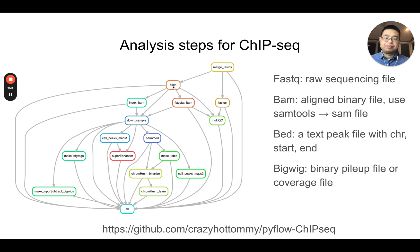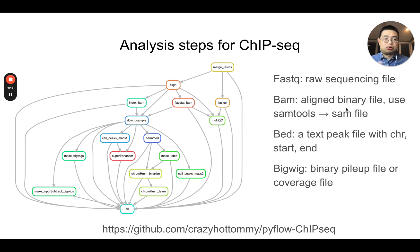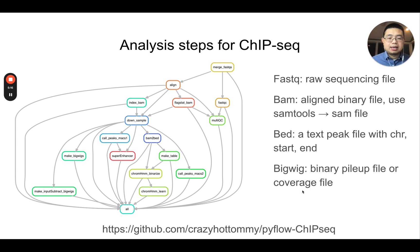You align the FASTQ files to the genome and get a file called a BAM file — those are aligned binary files. You can use a tool called SAMtools to convert the BAM file to a SAM file, which is more like a regular text file you can visualize in the command line. After aligning to the genome, you can call peaks and get a file called a BED file. A BED file is a text-based peak file with at minimum three columns: chromosome, start, and end — it tells you where in the genome the signal is enriched. There's also a bigwig file, which is the binary pileup or coverage file.